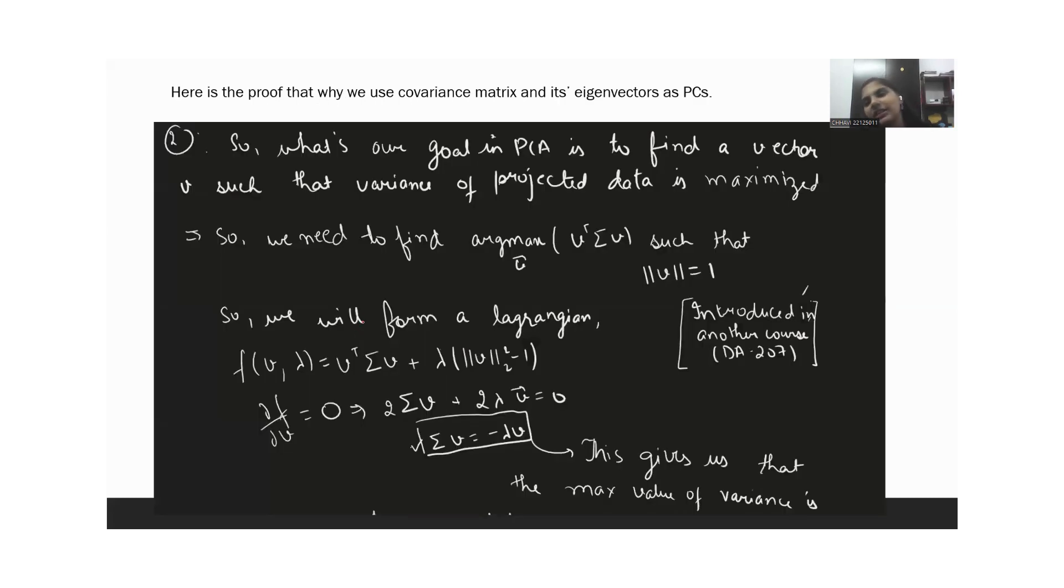So a few questions that might arise in your mind as it did in mine. The first question that might arise in your mind would be, why do we find the covariance matrix and its eigenvectors? Why are they so important? Why does this covariance matrix have so much focus?